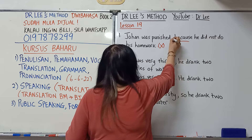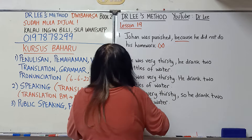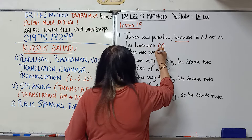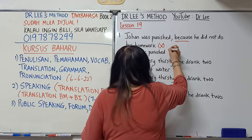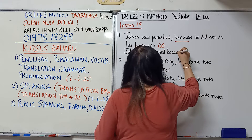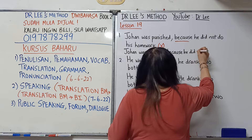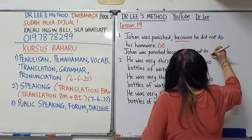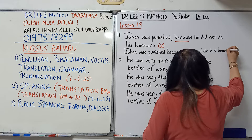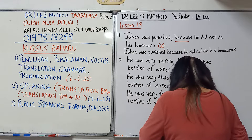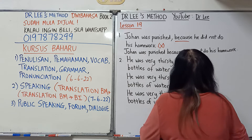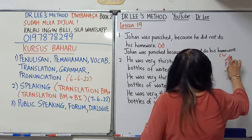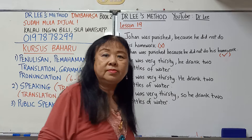所以第二题，正确的写法是：Johan was punished because he did not do his homework. 这样这个造句就是对的了。